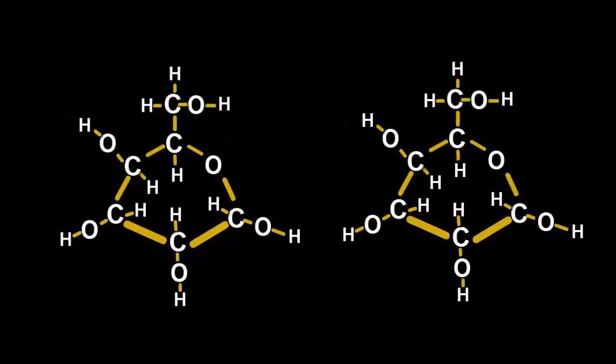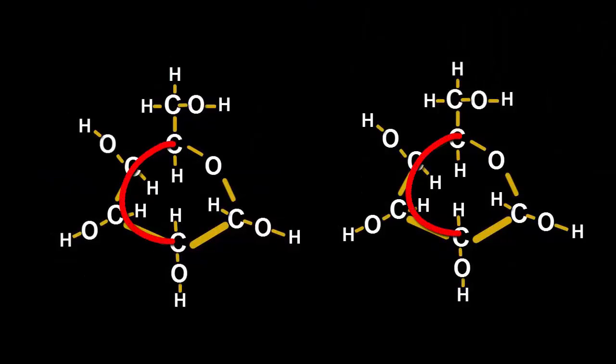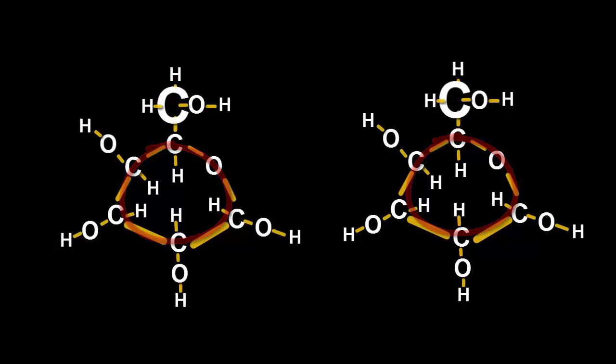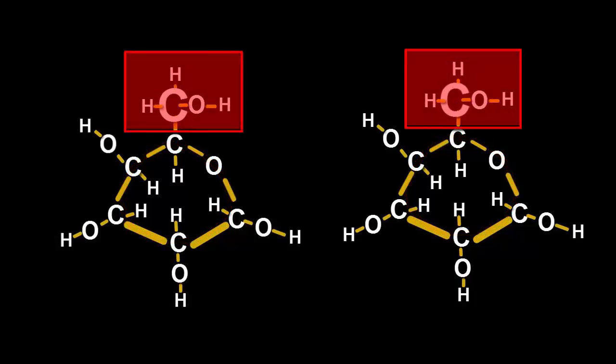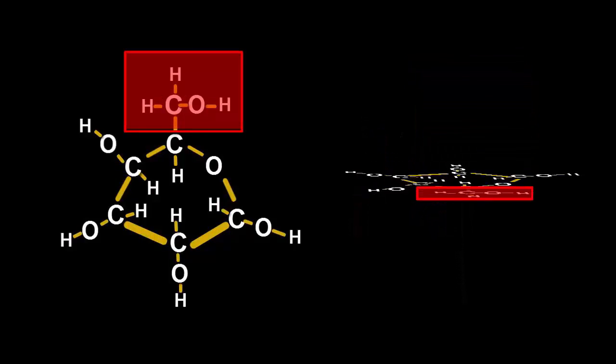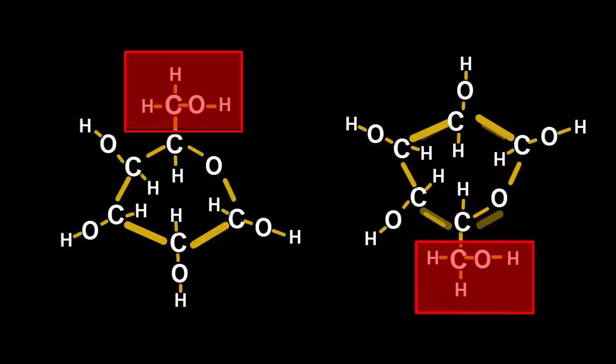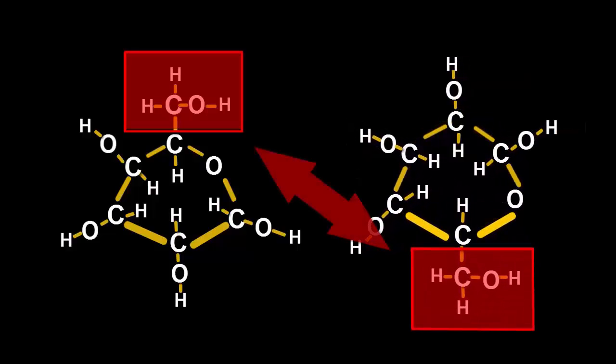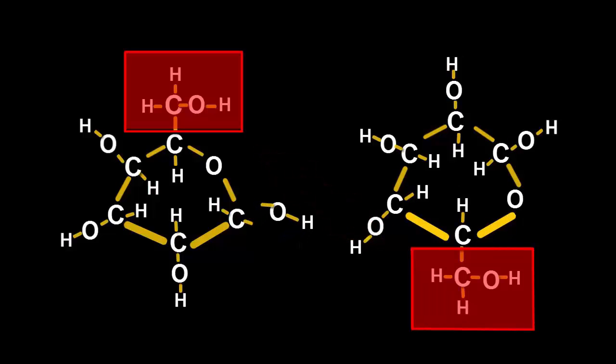But plants have another trick up their sleeve. Can you spot the carbon atoms outside the cyclic rings? If every second glucose molecule is flipped 180 degrees so that these bits are on opposite sides, before the glycosidic bonds are formed, then a different kind of polysaccharide is made.